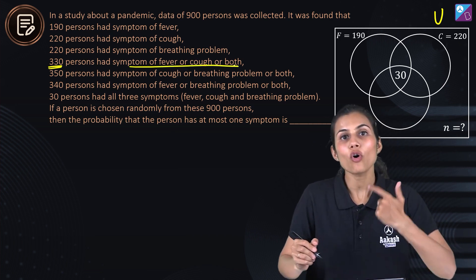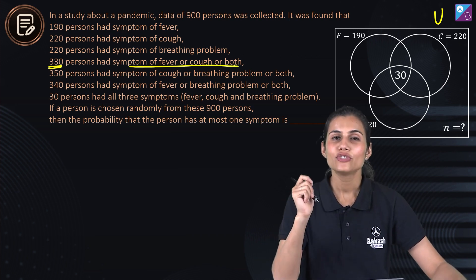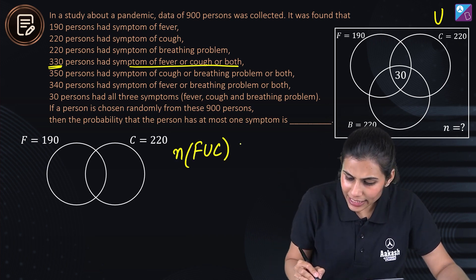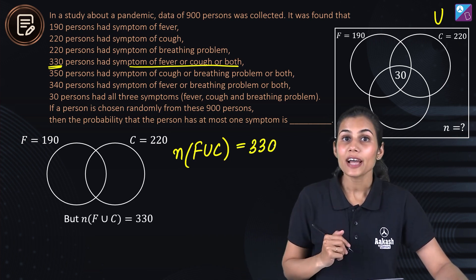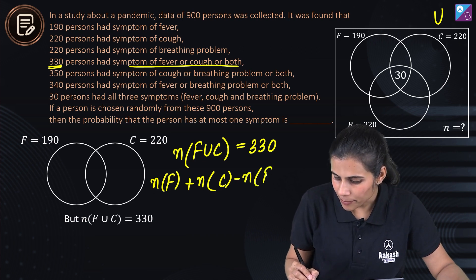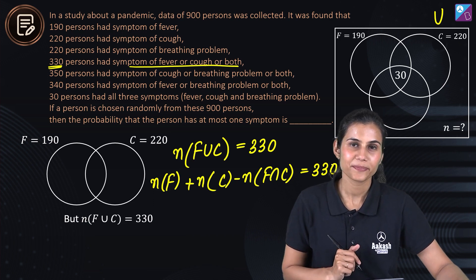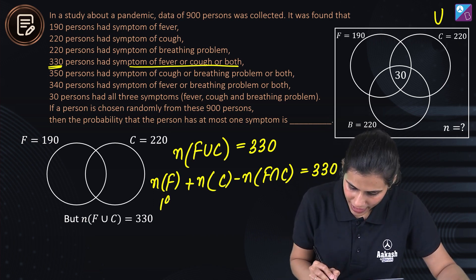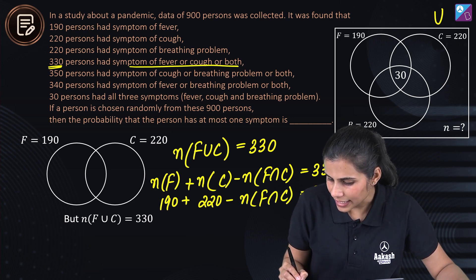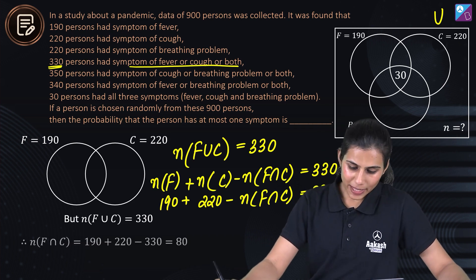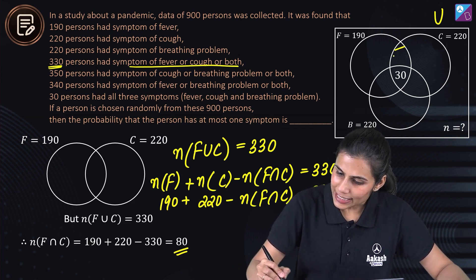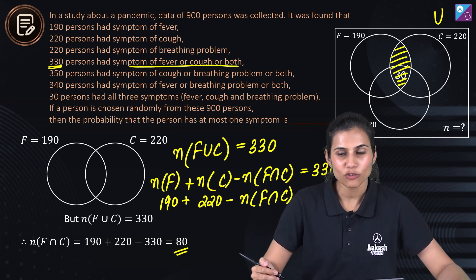Let's start with fever and cough. We are given that the number of members in F union C is 330. Using the formula: |F| + |C| − |F∩C| = 330. People having fever is 190, people having cough is 220, so 190 + 220 − |F∩C| = 330. From this equation you can very easily obtain the number of members having both fever and cough to be 80.